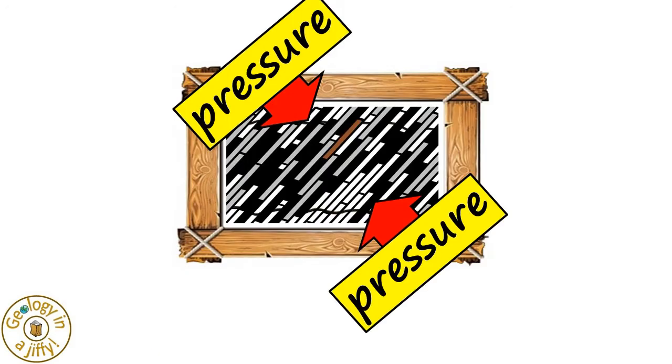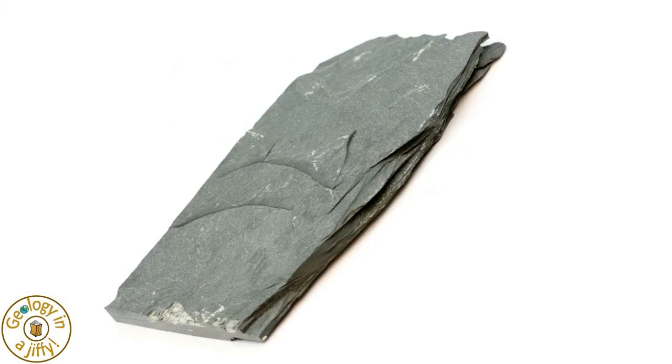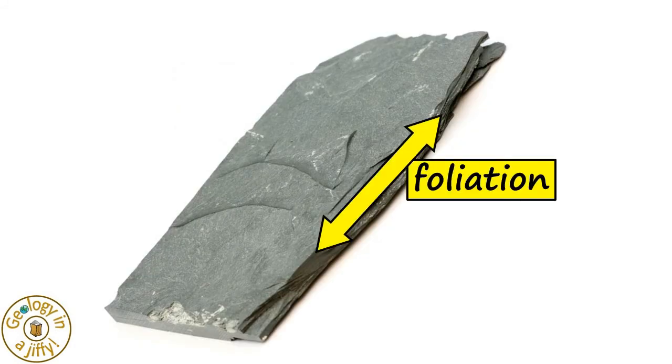The crystals grow perpendicular to the direction of pressure, and this alignment gives the slate a foliation, which we can clearly see in our piece of slate.